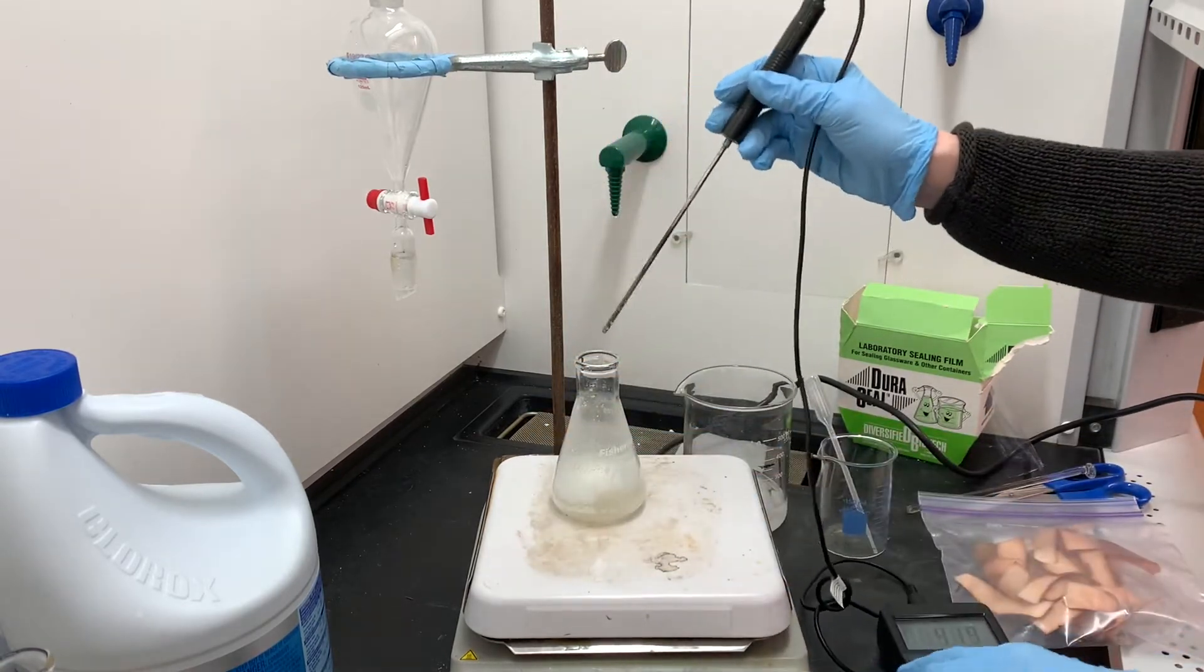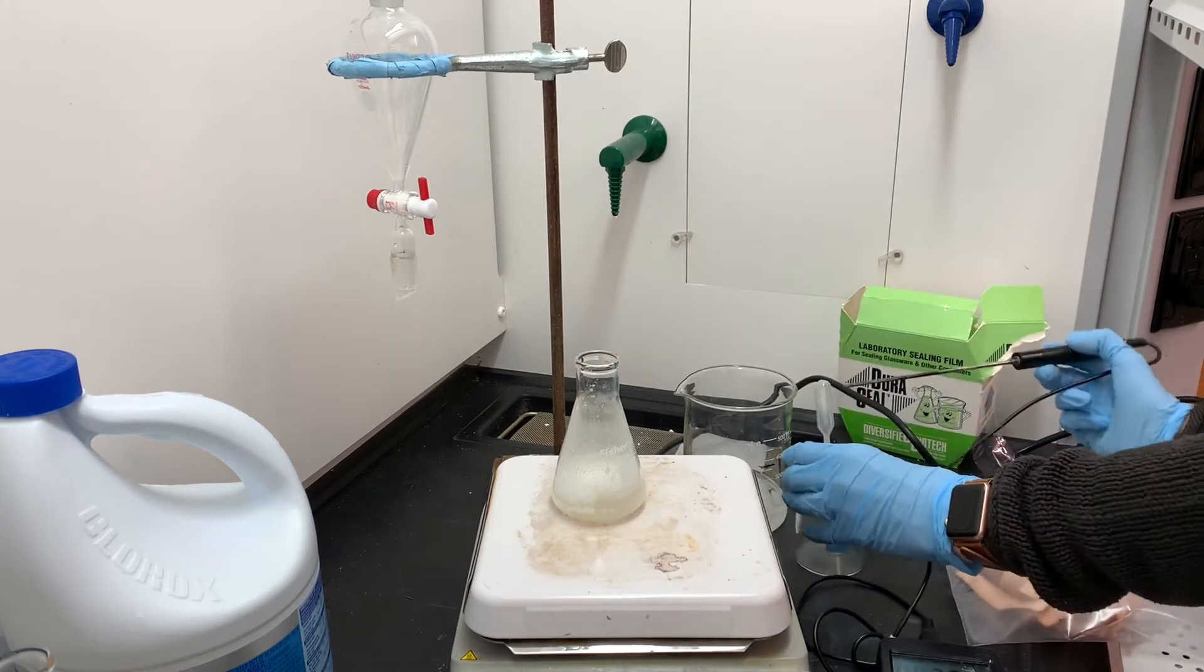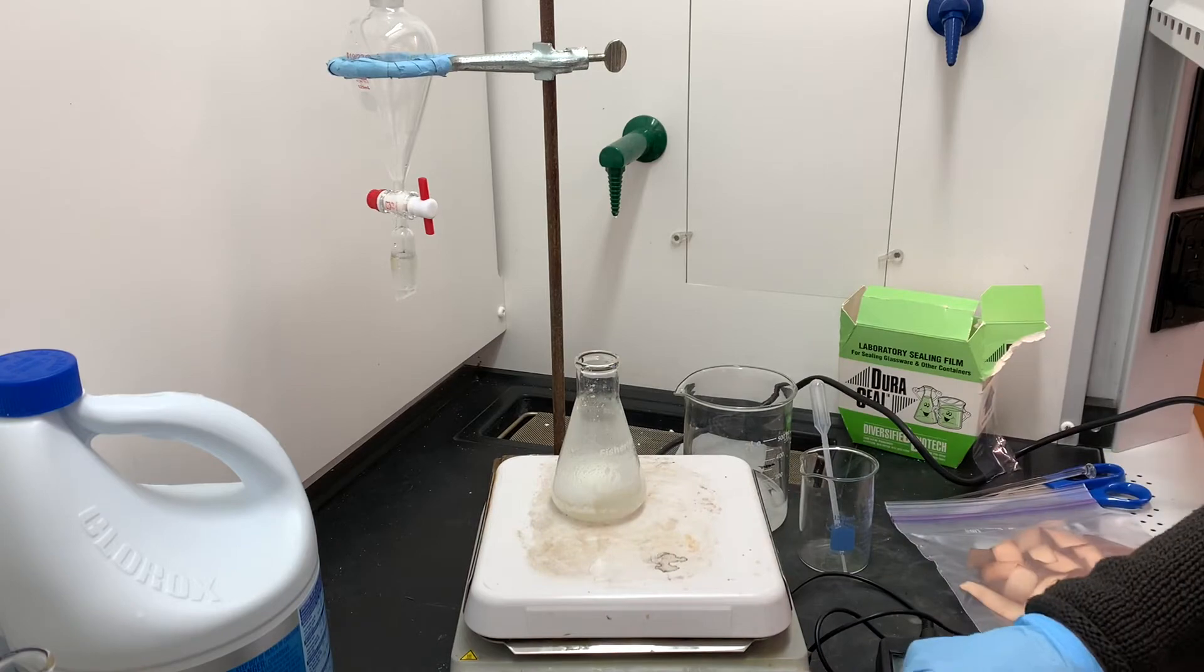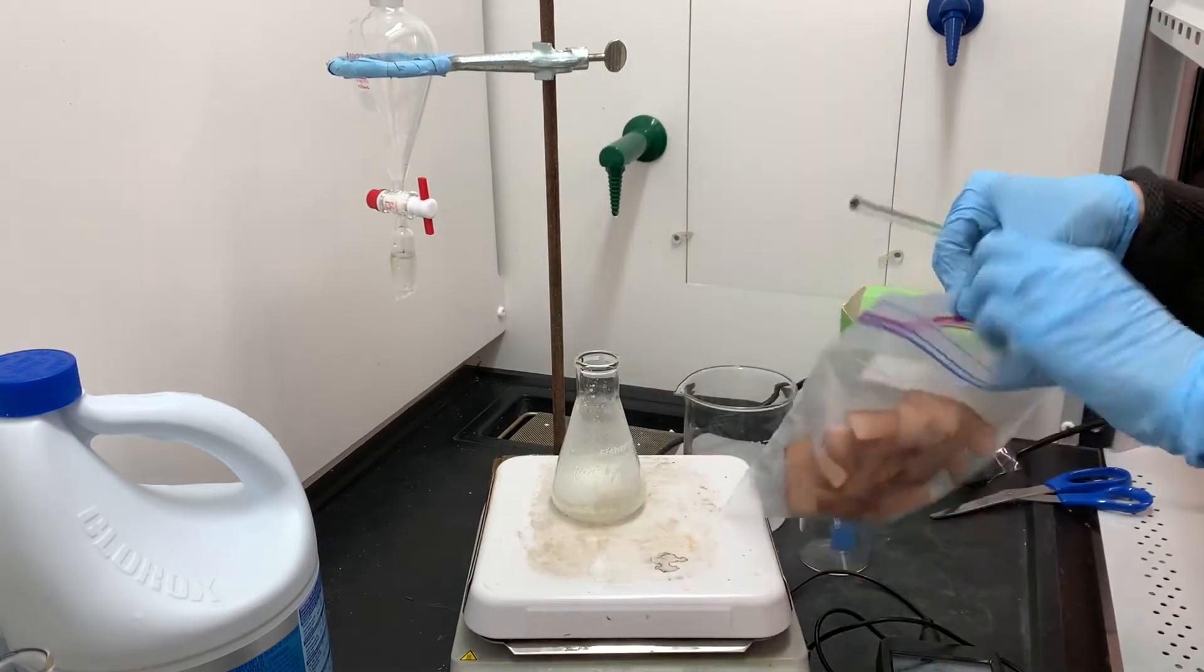It's important that we make sure that we always have excess bleach present in this flask during the 30-minute reaction period. I'm going to be monitoring the presence of excess bleach using starch iodide paper. This is kind of like pH paper.